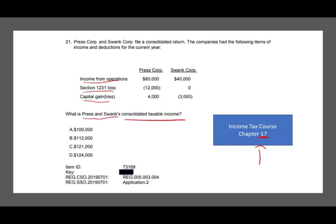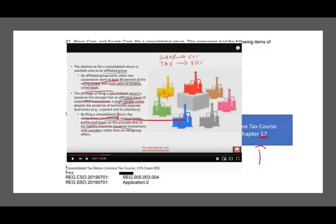You have to know a little bit about consolidated tax income. I don't think they will give you a simulation - I'll be shocked if they give you a simulation about consolidated taxable income. But as a CPA candidate, you need to know how they compute taxable income in a consolidated return. By the way, on my website, I have a 15-minute lecture about specifically this topic.